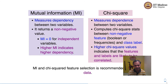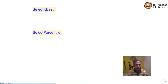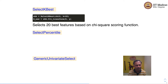We will not discuss f-statistics further in this course. Let's look at univariate feature selectors: SelectKBest, SelectPercentile, and GenericUnivariateSelect. For a concrete example of SelectKBest, we instantiate a SelectKBest object with chi-square as the scoring function and k equal to 20, meaning we want to select the 20 best features. We then apply the fit_transform method on the feature matrix and label vector to obtain a transformed feature matrix.